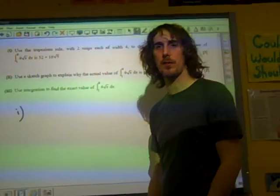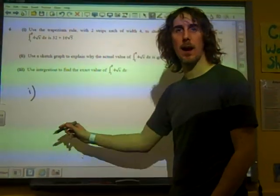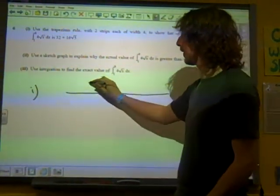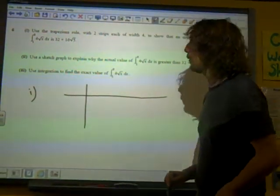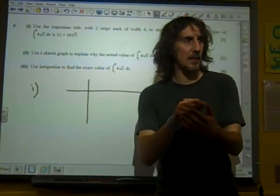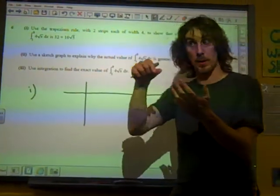It's almost not worth setting out a little table, but I was taught to set out a little table to do these. And so my two strips, if I've got two strips, that means I need three values, doesn't it? Because I need one either side.